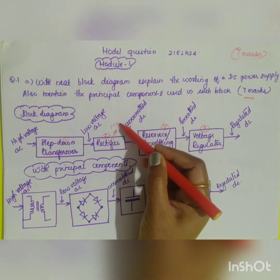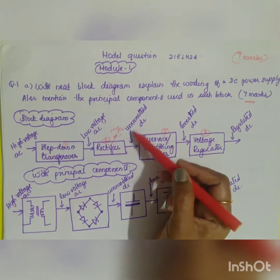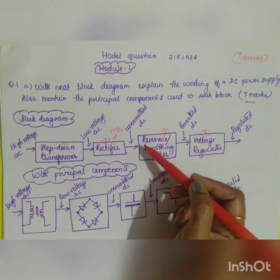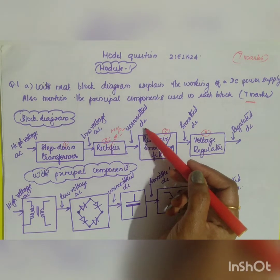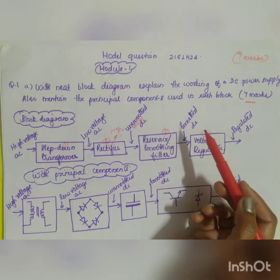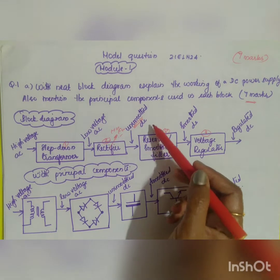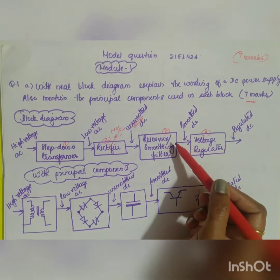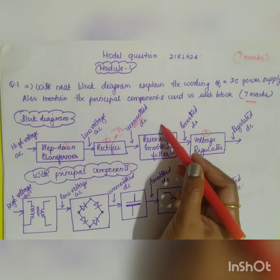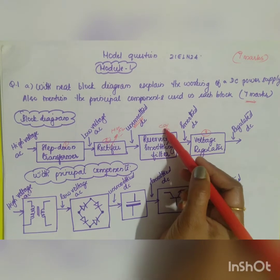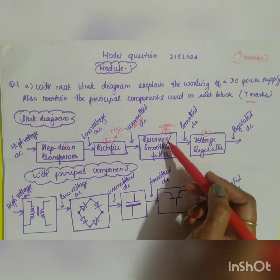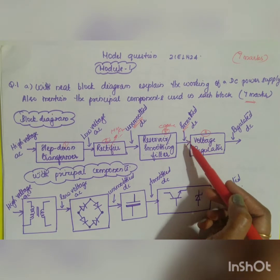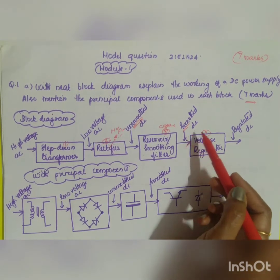The next stage is the rectifier, which can be of three types: half wave, full wave, or bridge wave rectifier. The output of the rectifier is an unsmoothed DC signal with ripples present. To remove the ripples, we go for the next part — the reservoir or smoothing filter — which is nothing but a capacitor added to the circuit.